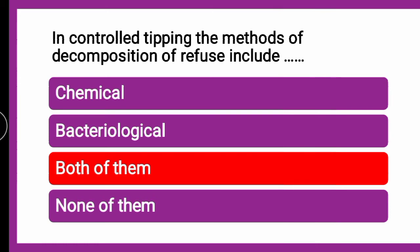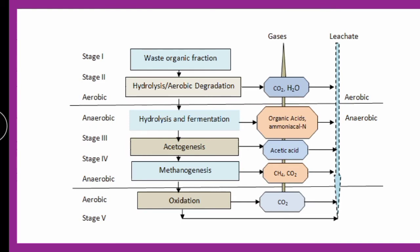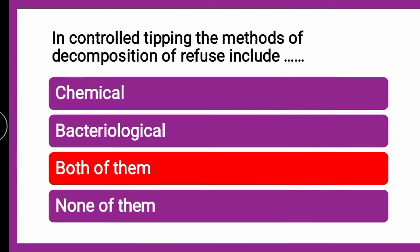In controlled tipping, the methods of decomposition of refuse include both chemical and bacteriological methods. As you can see in the picture, the waste undergoes aerobic degradation and anaerobic degradation. The process involves hydrolysis, acetogenesis, generation of acetic acid, methanogenesis, and generation of methane and carbon dioxide. All these show that controlled tipping includes both biochemical and bacteriological decomposition.